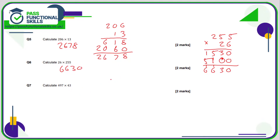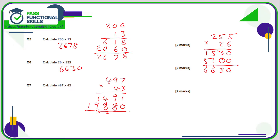Question 7: 497 times 43. Two-digit number on the bottom. 3 sevens are 21, 1 carry 2; 3 nines are 27 plus 2 is 29, 9 carry 2; 4 threes are 12 plus 2 is 14. Moving to the 4 of 40, put in a 0: 4 sevens are 28, 8 carry 2; 4 nines are 36 plus 2 is 38; 4 fours are 16 plus 3 is 19. Adding together the answer is 21,371.